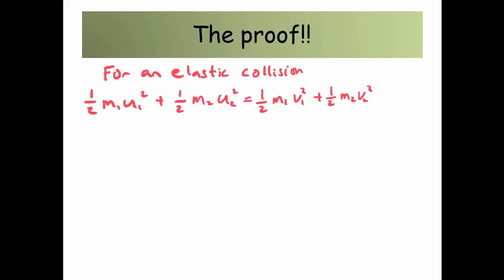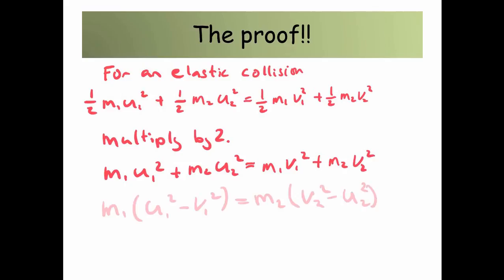So half M1U1 squared plus a half M2U2 squared equals a half M1V1 squared plus a half M2V2 squared. I'm going to multiply everything by 2 just to get rid of the half, and then just to tidy up, put everything in brackets.